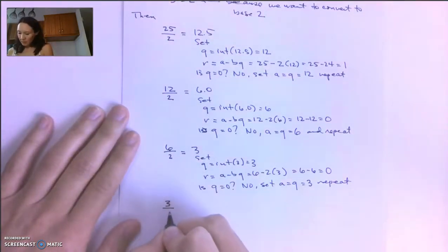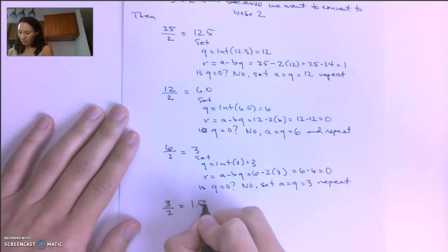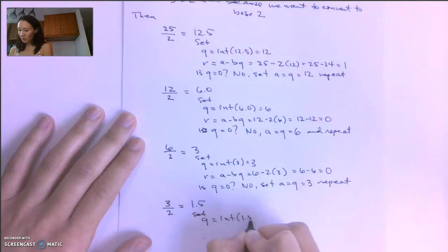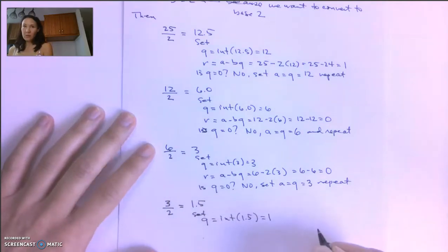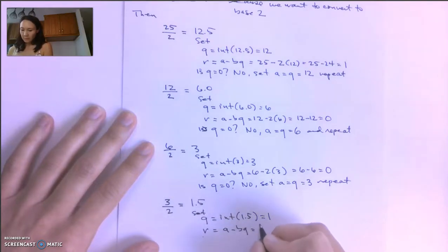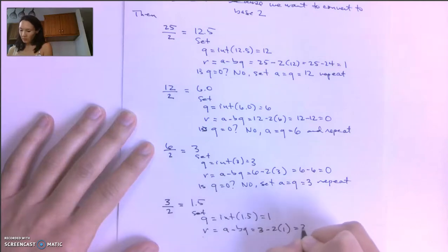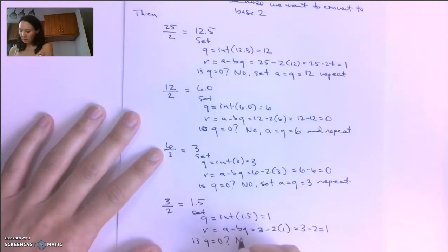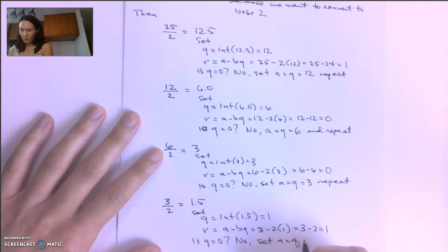Our next step: 3 divided by 2 gives us 1.5, so we set Q equal to the integer part of 1.5, so Q will be 1. We set R equal to A minus BQ, which is 3 minus 2 times 1, which is 3 minus 2, or a remainder of 1. Is Q equal to 0? Our Q is 1, so the answer is no. So we set A equal to Q equal to 1, and repeat.